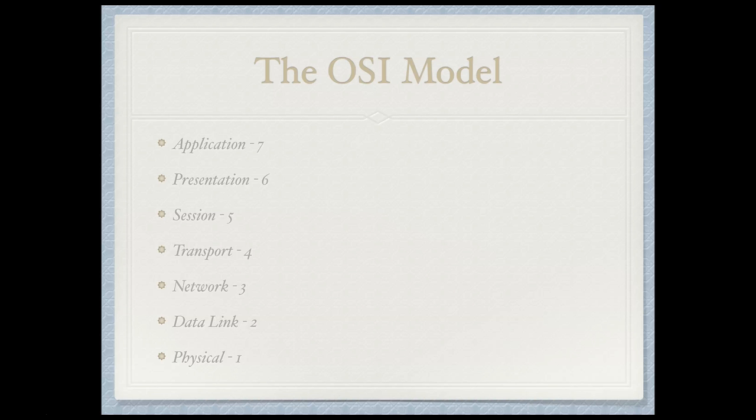Starting at layer 1 and working our way up: the physical layer is layer 1, the data link layer is layer 2, the network layer is layer 3, transport is layer 4, the session layer is layer 5, the presentation layer is layer 6, and the application layer is layer 7.